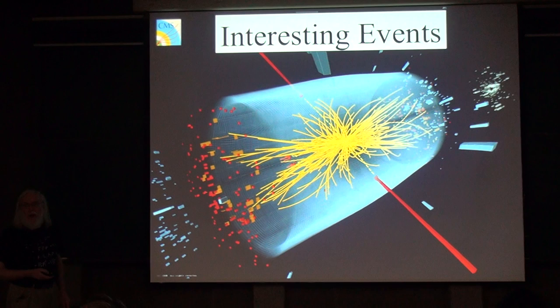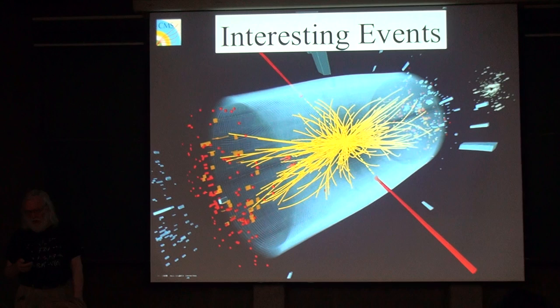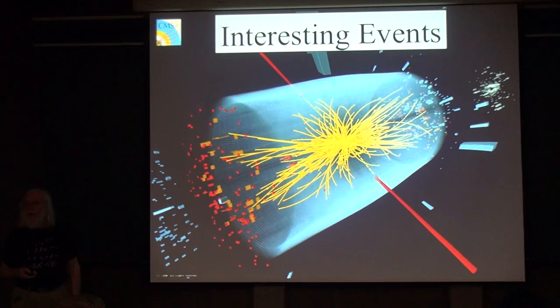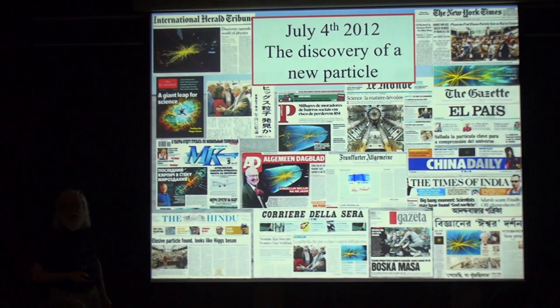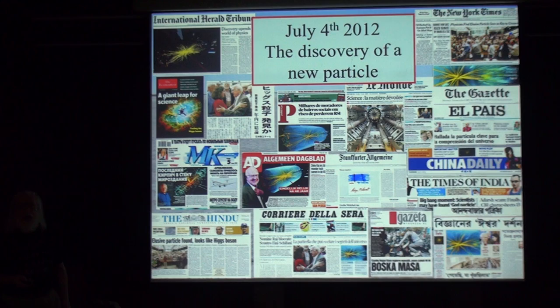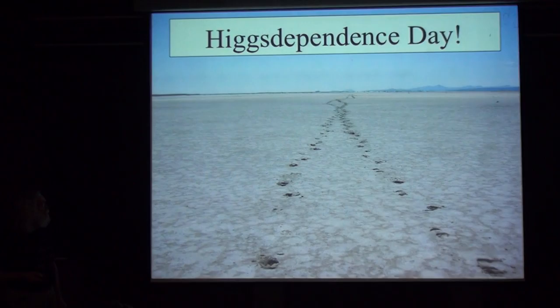Here is an example from the CMS experiment. The Higgs might decay into two energetic photons — gamma-gamma — and that's what you see here: no charged particles but two blobs of energy that could have been produced by the decay of the Higgs into gamma-gamma. It was on the basis of this that on July the 4th last year the Atlas and CMS collaborations announced the discovery of a new particle.